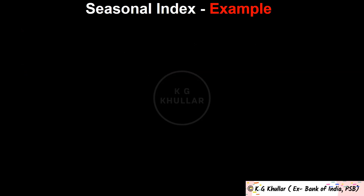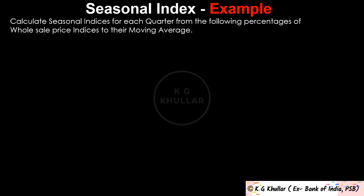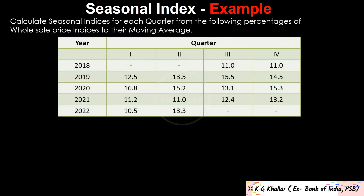In questions you will often be given quarterly ratio to moving average values like this. As you can see, first we have the year and then quarterly ratio to moving average values are given. For 2018, values of quarter 3 and 4 are given as 11 and 11. Then for 2019, quarter 1 value is 12.5, quarter 2 is 13.5, quarter 3 is 15.5, and quarter 4 is 14.5. Similarly, ratio to moving average values are given for 2020, 2021, and 2022.